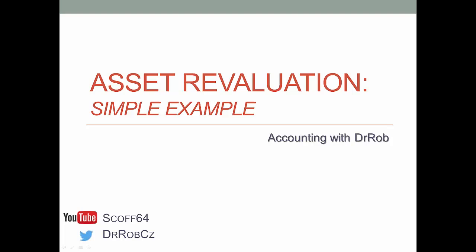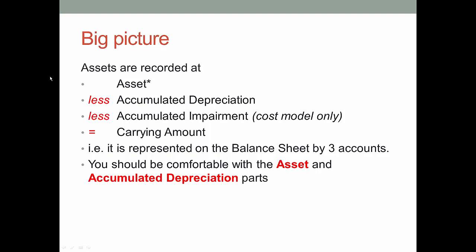Let's talk about what we need to do and why we're into revaluation. Generally, assets are carried at carrying amount which consists of the asset's basic value, accumulated depreciation - which you should feel comfortable with - and accumulated impairment. Now accumulated impairment only applies for the cost model, but we'll come back to that. So those three accounts basically make up the carrying amount of the asset, potentially recorded on the balance sheet by three accounts.